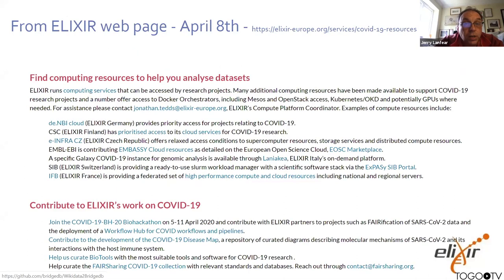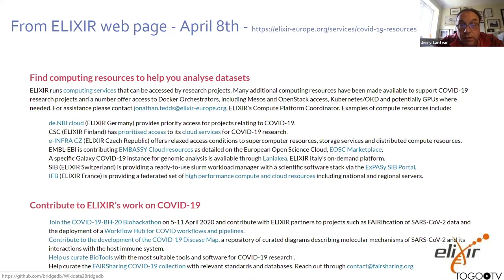On compute resources: a number of different nodes have compute resources available for COVID-19 research. ELIXIR Germany's DENBI organisation has the DENBI cloud available. CSC in ELIXIR Finland has prioritised access for its cloud services for COVID-19. For Galaxy, there's genomic analysis available through the Laniakea ELIXIR on-demand platform. There's plenty of opportunity to contribute to ELIXIR's work on COVID-19 here at the COVID-19 biohackathon.